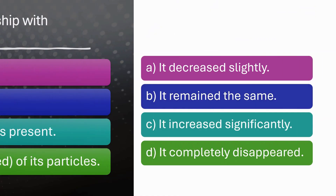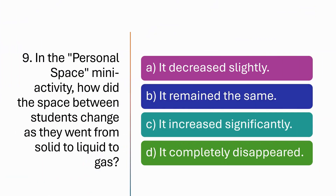In the personal space mini-activity, how did the space between students change as they went from solid to liquid to gas? A. It decreased slightly. B. It remained the same. C. It increased significantly. D. It completely disappeared.